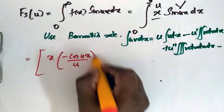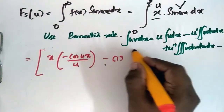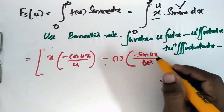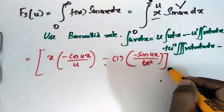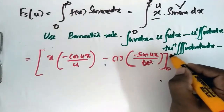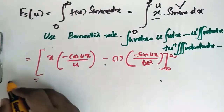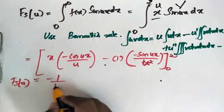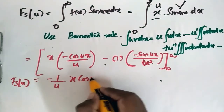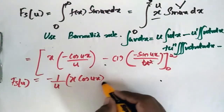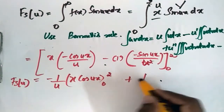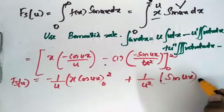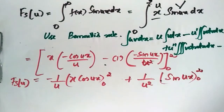We get: minus cos(ux) by u, minus 1 into minus sine(ux), evaluated from 0 to 2. Substituting the values, fs(u) is equal to minus 1/u into x·cos(ux) from 0 to 2, plus 1/u² into sin(ux) from 0 to 2.